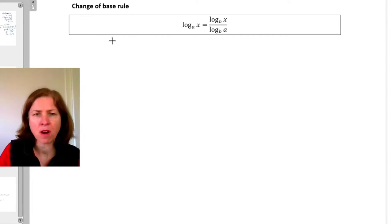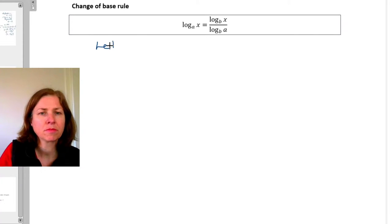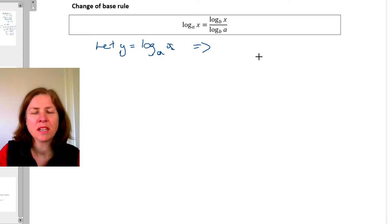So this is where it comes from. I'll just start by writing let y equal log base a of x. Then that means I can rewrite that using my exponential notation instead of logarithmic notation, that a is going to be the base, y is going to be the power, and that's all going to equal x.